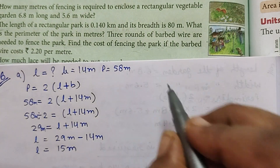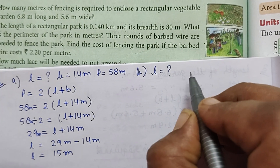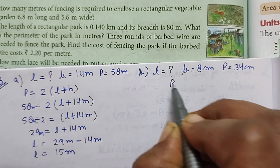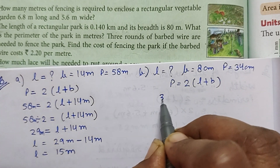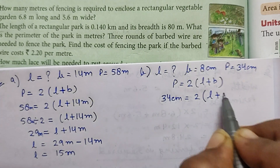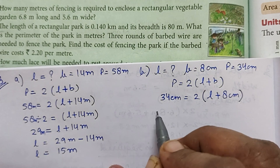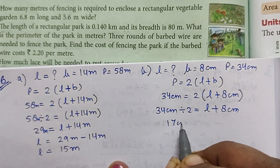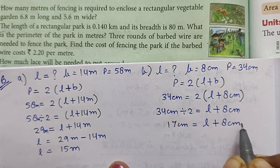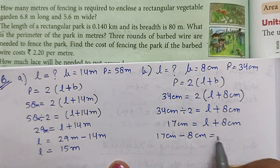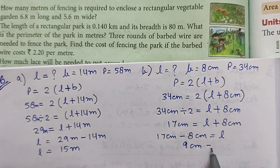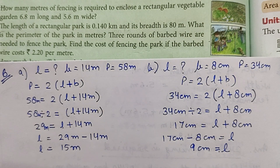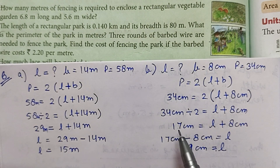Part B: breadth is 8 centimeters and perimeter is 34 centimeters. Using the perimeter formula, we put in the values: 34 divided by 2 gives 17 centimeters, equal to length plus 8 centimeters. So length equals 17 minus 8, which is 9 centimeters.